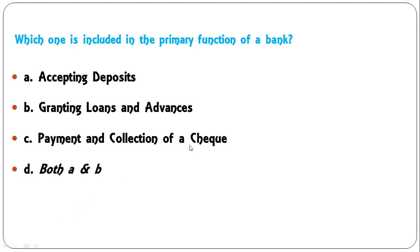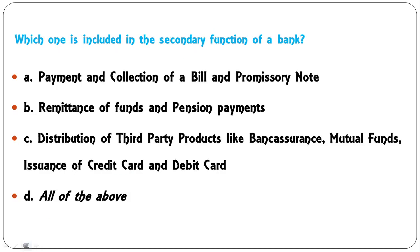Which one is included in the primary function of a bank? Options are: accepting deposit; granting loan and advances; payment and collection of a cheque; or both A and B. The correct answer is both A and B. Payment and collection of cheque is not a primary function. Only accepting deposit and granting loan and advances are among the primary functions of a bank.